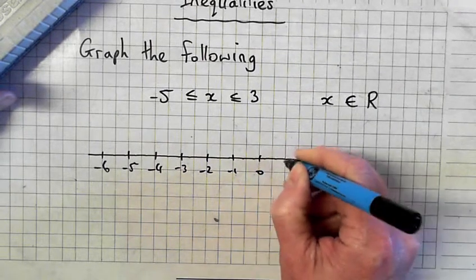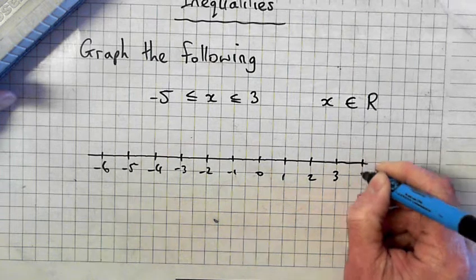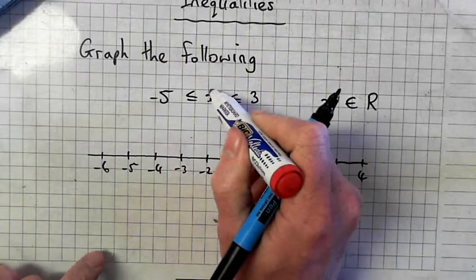minus 1, 0, 1, 2, 3, 4. All right. So I'm standing in the middle here.